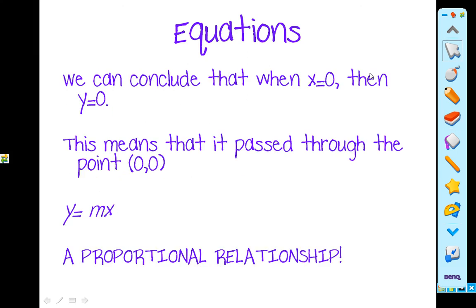You can conclude that when x is 0, then y is 0. When x is equal to 0, then y is equal to 0. And we are talking about the equation. Down here you have y is equal to mx. This means whenever your x is 0 and your y is 0, it will pass through the point (0, 0). That's the proportional relationship.